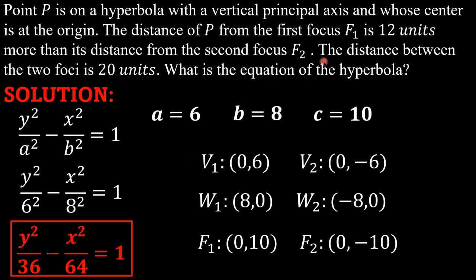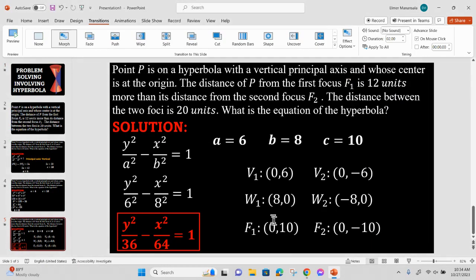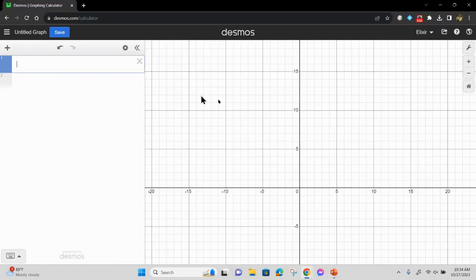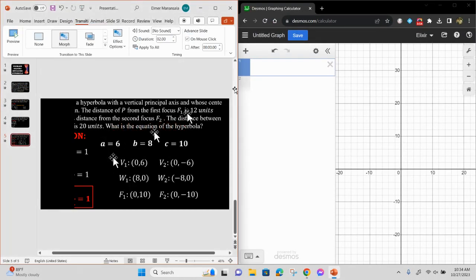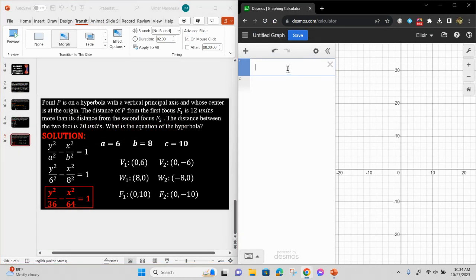Para ma-prove natin na ang distance between the two foci is 20 units, pwede natin siyang i-graph sa Desmos. Let me just open Desmos. Papakita ko na rin and ipa-plot natin lahat ng coordinates. y² over 36 minus x² over 64, and that is equal to 1.